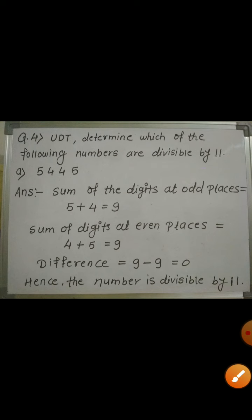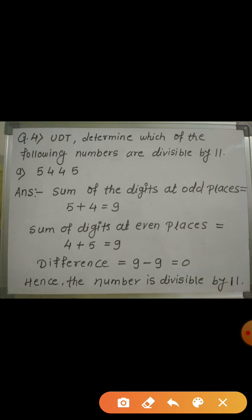Let's see the first example. The number is 5445. We number the digits from the right — this is the first, this is second, this is third, and this is fourth. Now let's see which digits come at odd places: the digits 5 and 4 come at the odd places, that is positions 1 and 3.